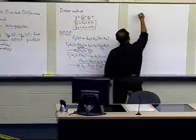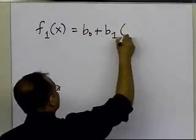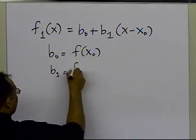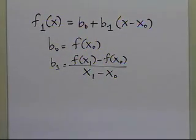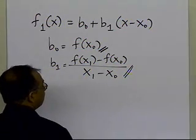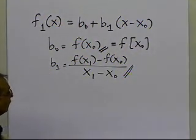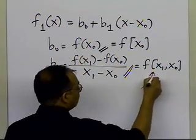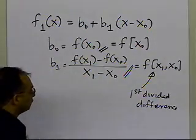Based on this, our first order polynomial approximating the function from x0 to x1 is given by: f1(x) = b0 + b1*(x - x0), where b0 = f(x0) is the value of the function at x0, and b1 = [f(x1) - f(x0)] / (x1 - x0) is the slope between those two points. We can write b0 as the 0th divided difference, and b1 as f(x1, x0), called the first divided difference — which is why this is called the divided difference method.